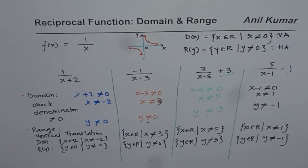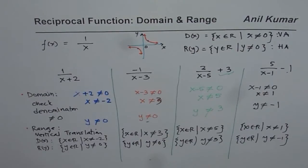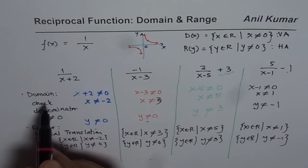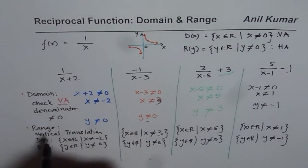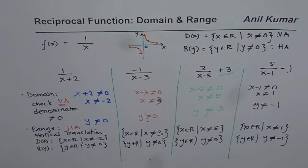That is how you can write domain and range straight from the equation for any reciprocal function. The restriction in domain is because of the vertical asymptote, and for range we are looking at the horizontal asymptote. You can also look into domain and range of rational functions more broadly — this is a special case — and we will look into more cases of rational functions in detail in the next video. I'm Anil Kumar and I hope this video helps you.